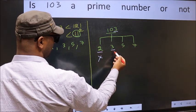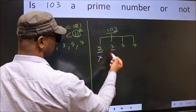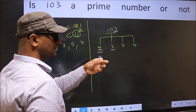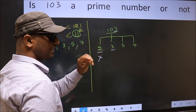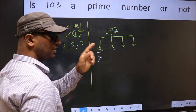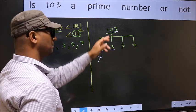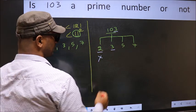Next number, 3. To check divisibility by 3, add the digits: 1 plus 0 plus 3, we get 4. And 4 is not divisible by 3. So, this number is also not divisible by 3.